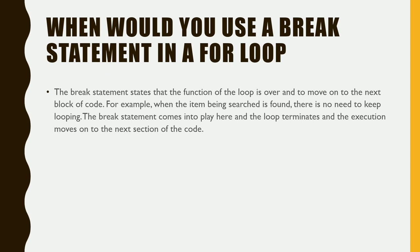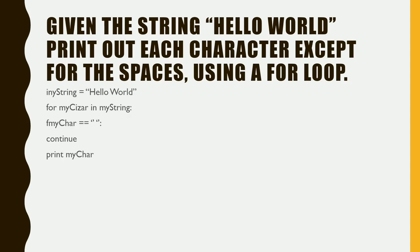When would you use a break statement in a for loop? The break statement signals that the function of a loop is over and execution should move on to the next block of code. For example, when the item being searched is found, there is no need to keep looping — the break statement terminates the loop and execution moves on to the next section of code.